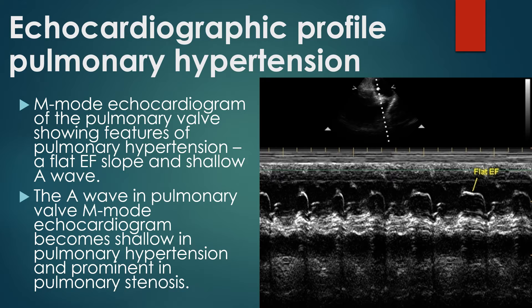M-mode echocardiogram of the pulmonary valve shows features of pulmonary hypertension: a flat EF slope and a shallow A wave. The A wave becomes shallow in pulmonary hypertension and prominent in pulmonary stenosis. M-mode assessment of the pulmonary valve was routine before Doppler echocardiography was available, but now it is seldom used, as right ventricle systolic pressures can be measured much more accurately from the tricuspid regurgitation jet by Doppler echocardiography using the Bernoulli equation.